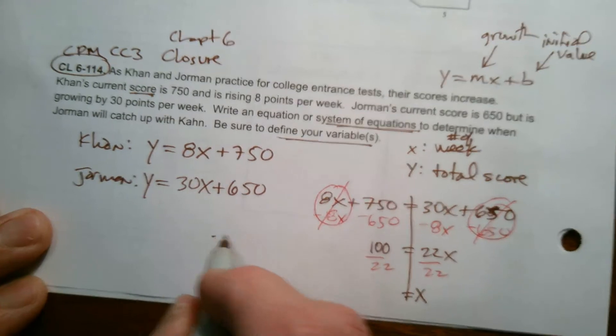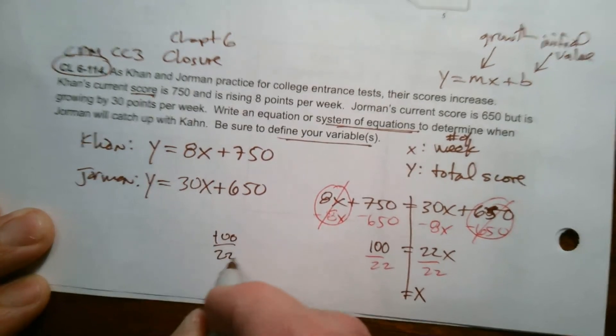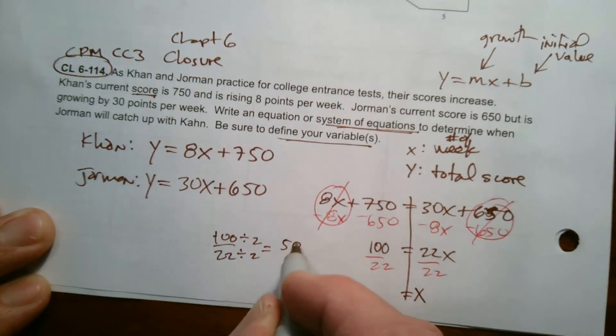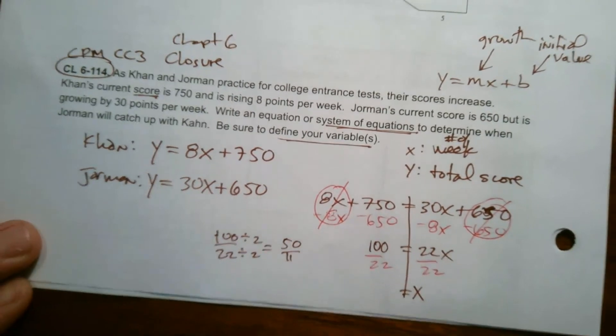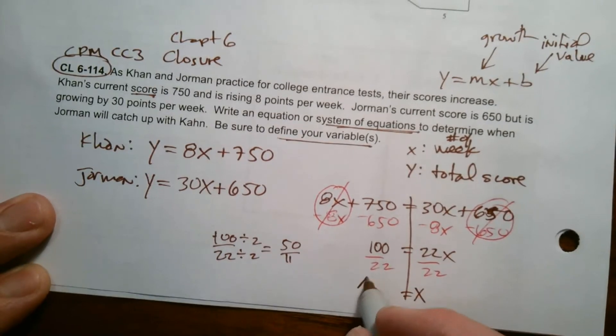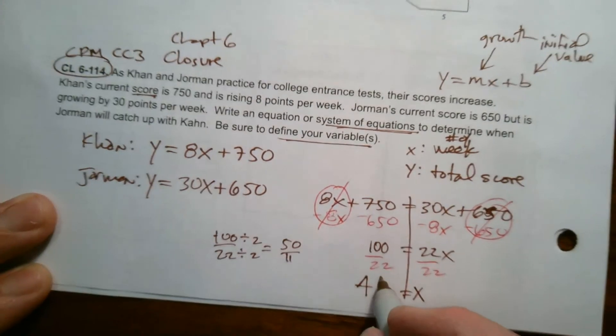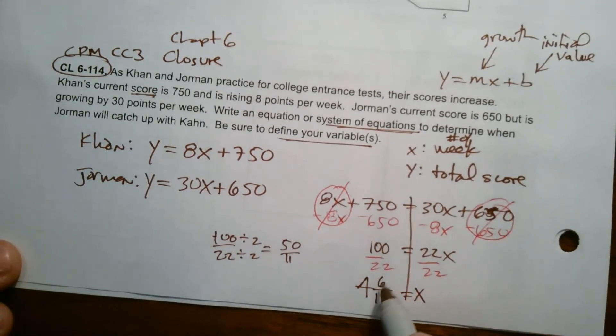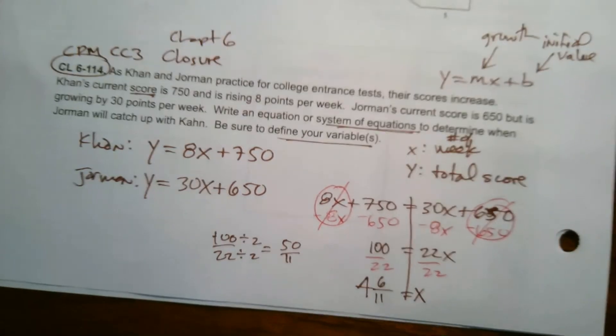Well, I'm going to leave it as a fraction. 100 over 22. I can divide top and bottom by 2. I'm going to simplify my fraction. I get 50 over 11. So then I know that 11 goes into 50 four times with 6 remaining. So it's 4 and 6/11, that's what X is.